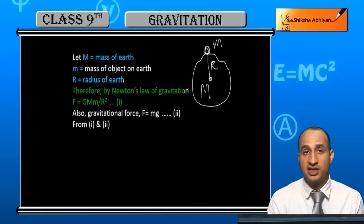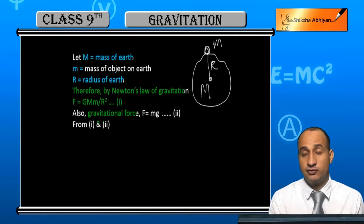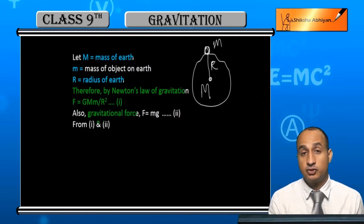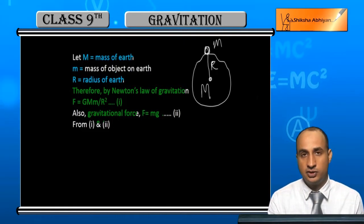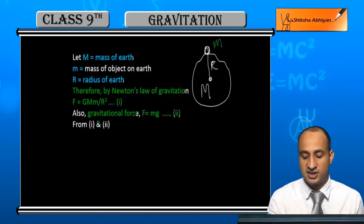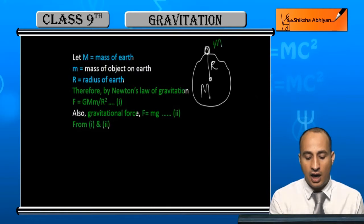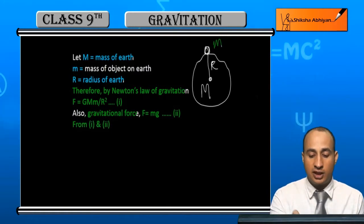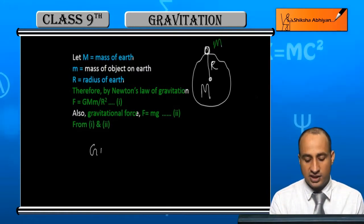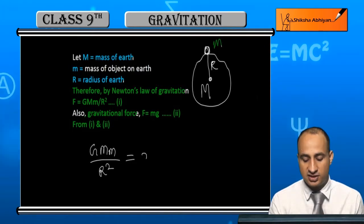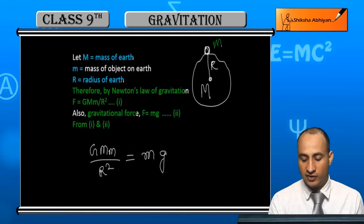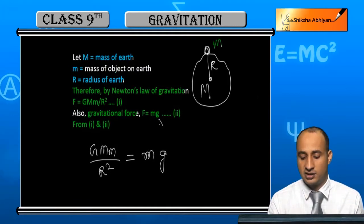Also, gravitational force F = mass × acceleration. Here acceleration is g, due to gravity. So F = m g. This is equation 2. Now equating equations 1 and 2, G M m / R² = m g.